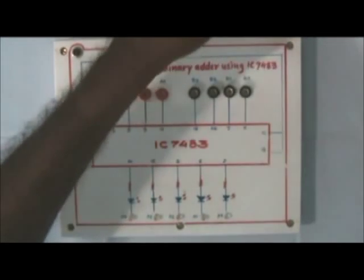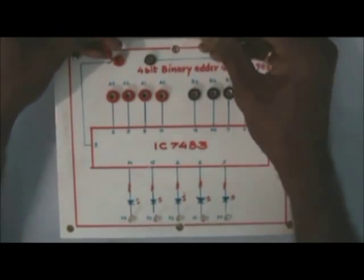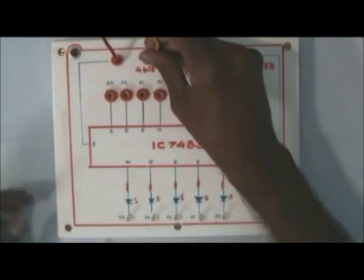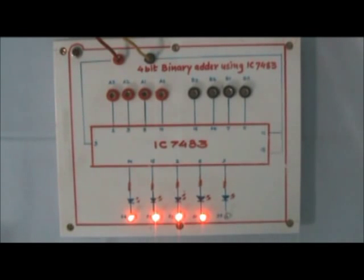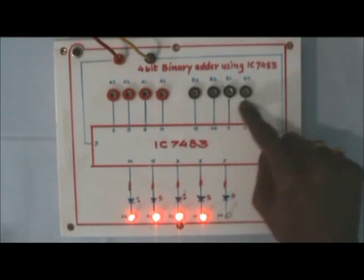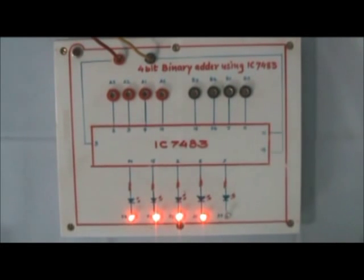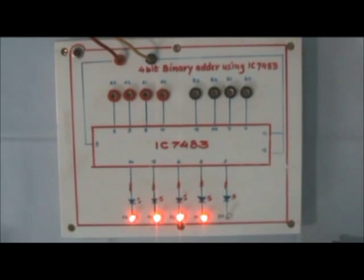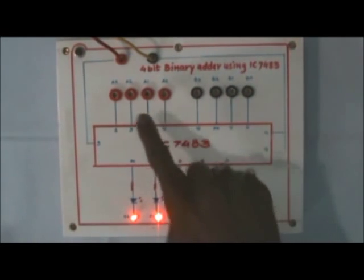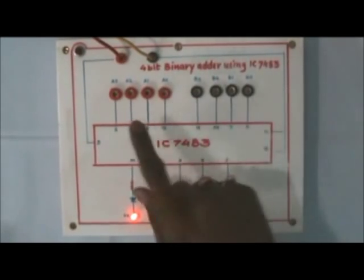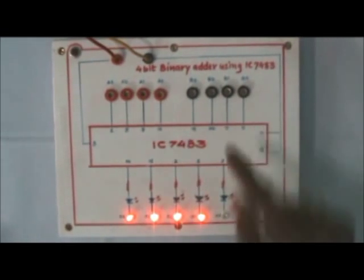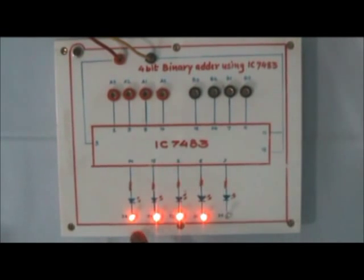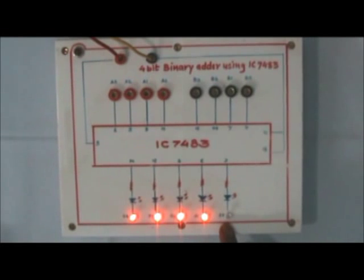Now I apply the 5 volt DC supply to the circuit. You can clearly see that all these binary input terminals are floating. When they're floating, the TTL IC considers them as logic 1 level, so the binary inputs right now are 1111 and 1111. The output, the addition of these two numbers, will be 11110.